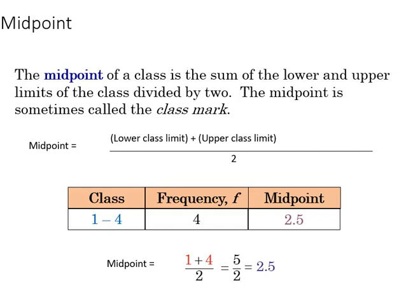The midpoint of a class, the part that you would find in the middle, is the sum of the lower and upper limits divided by 2. So not too tricky there. If you have a 1 and a 4, you add those together, that's 5, you divide that by 2, which is 2.5.